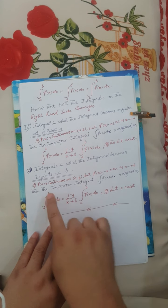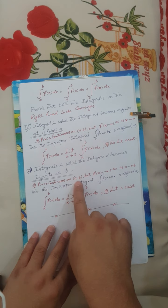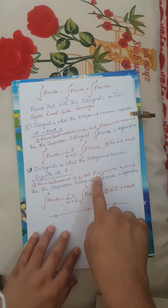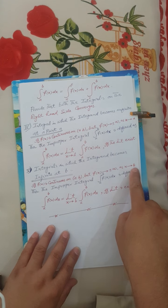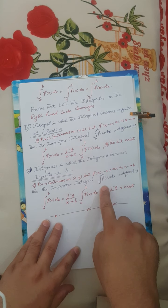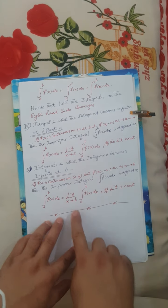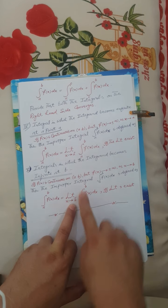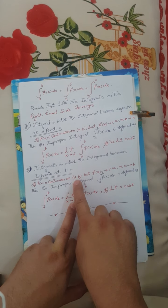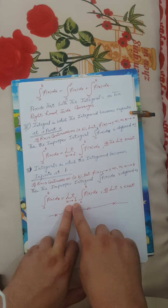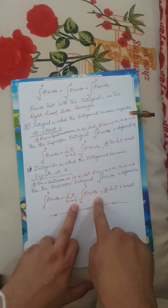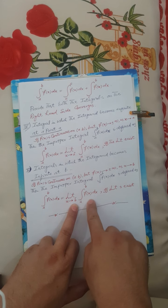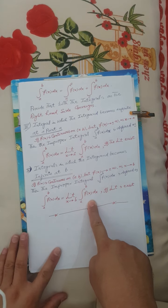Fifth condition: the integrand becomes infinite at the endpoint b. If f(x) is continuous on [a, b) but tends to plus or minus infinity as x tends to b, then the improper integral from a to b of f(x) dx is defined as the limit as x tends to b from the left of the integral from a to x of f(x) dx, if that limit exists.